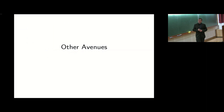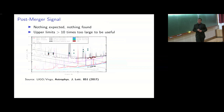Let me briefly summarize some other avenues. The post-merger signal search: nothing was expected to be found and nothing was found. The expected direct post-merger oscillation signal from numerical relativity is roughly a factor of 10 below the upper limits obtained for this event — to be truly constraining you would need a source ten times closer. Other remnant oscillation searches and a paper looking for long-time oscillations found nothing either, but again nothing was really expected.